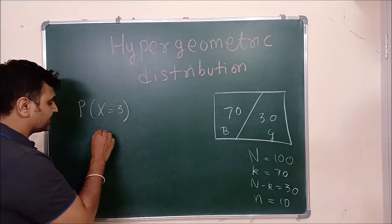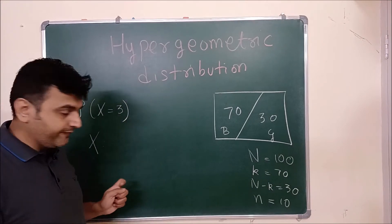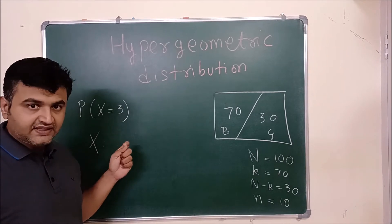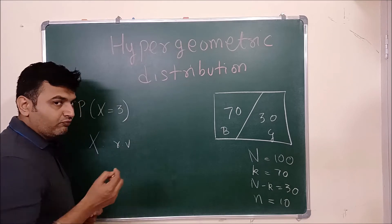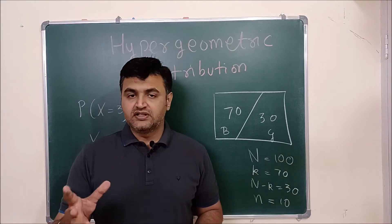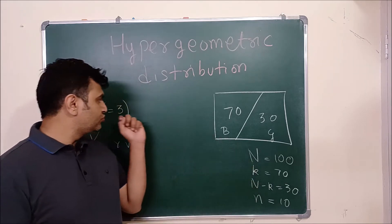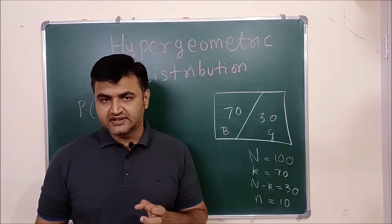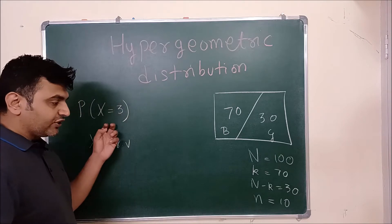Now, my X is a discrete random variable which counts the number of boys. If a boy is chosen, I call it a success; if a girl is chosen, I call it a failure. Alternatively, if I want to choose three girls, then choosing a girl is a success and choosing a boy is a failure.